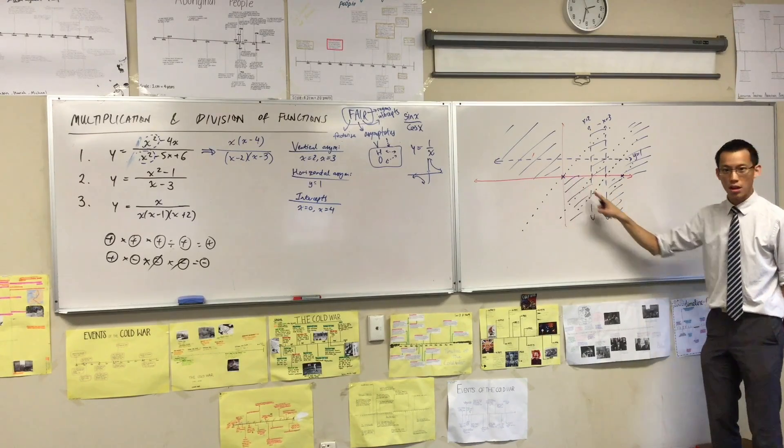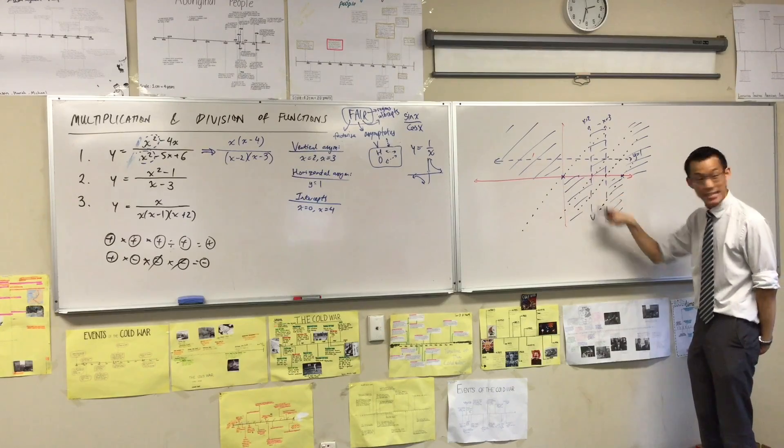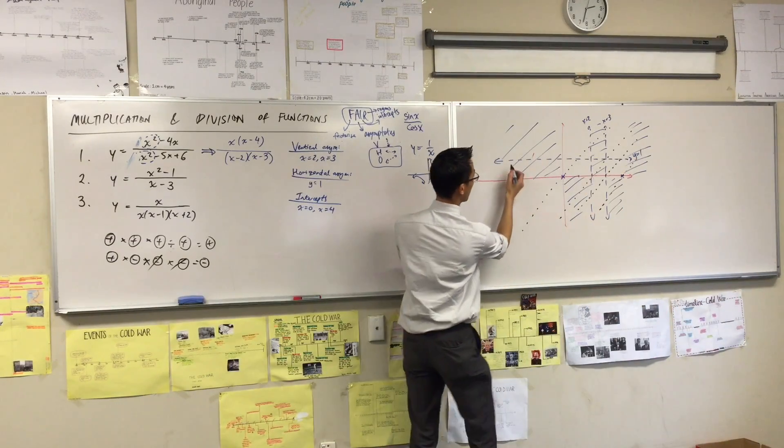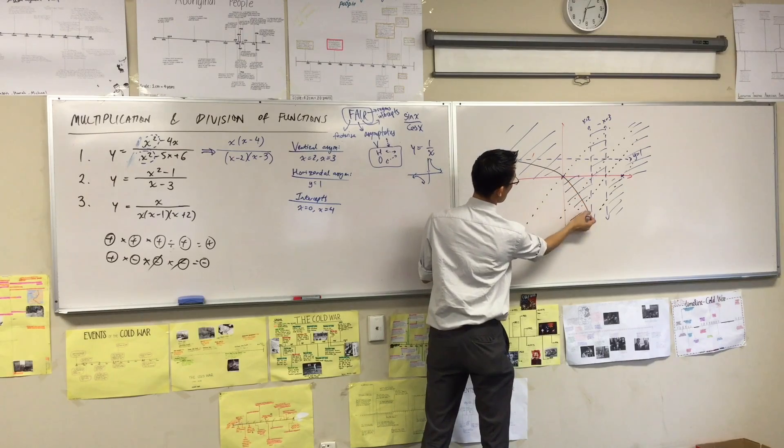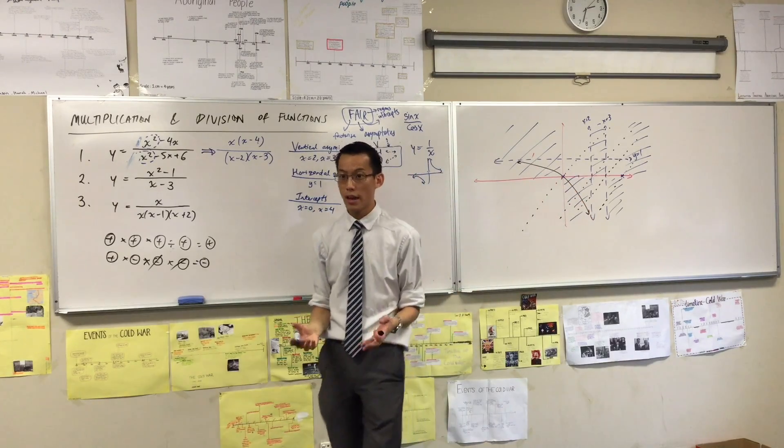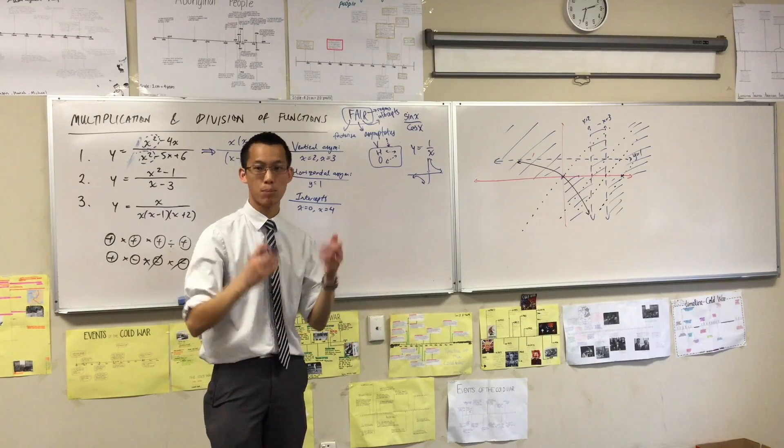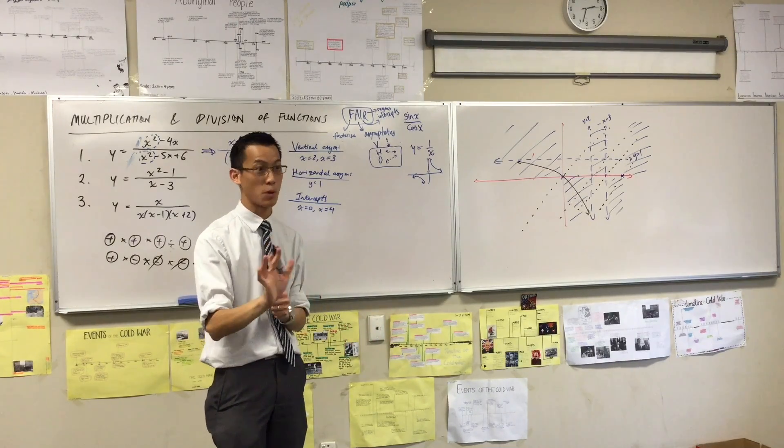And then what happens down here? What's going on? Negative. I'm negative. And I've got to get towards this asymptote. Do you see that? This is not a crazy shape. It's going to look like this. That's all it has to do. You see how it stays in my regions and it goes through my intercept and it approaches both the asymptotes I know it's supposed to.